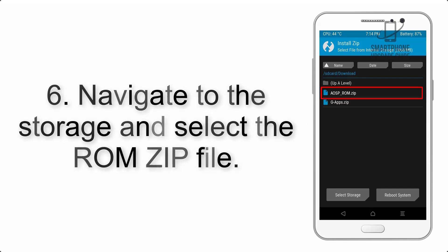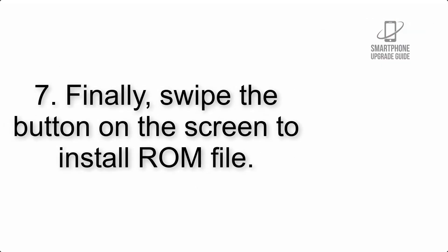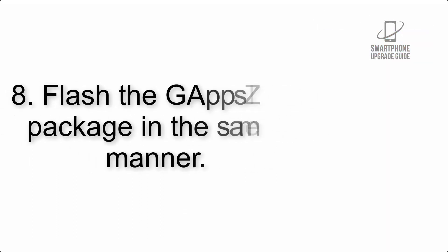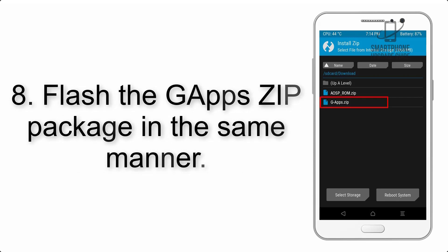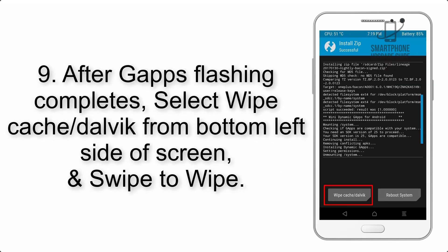Step 6: Navigate to the storage and select the ROM zip file. Step 7: Swipe the button on the screen to install the ROM file. Step 8: Flash the GApps zip package in the same manner.